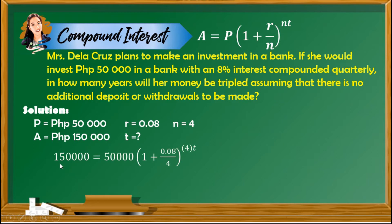Substituting the values, we have 150,000 is equal to 50,000 times 1 plus 0.08 over 4, raised to the power of 4 times T. The first thing to do is divide both sides by 50,000, then simplify. We now have 3 is equal to 1.02 raised to the power of 4T.